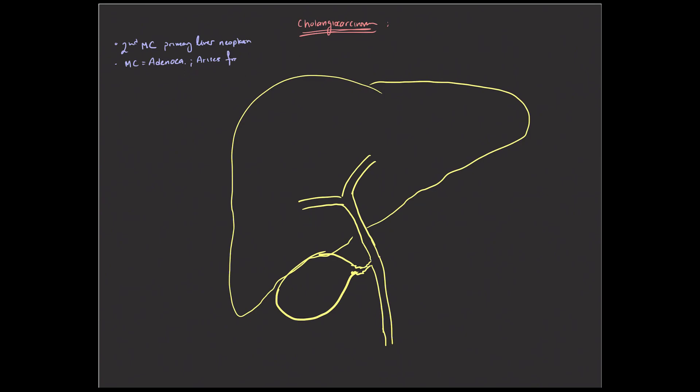These are neoplasms that arise from the biliary tree. They can be intrahepatic ducts or the extrahepatic ducts, but that's where they arise from, these cholangiocarcinomas. When you look at all patients with cholangiocarcinomas, we end up finding that they most often are seen in patients towards the sixth and seventh decades of life. But it is important to know that they can be seen earlier in patients who have risk factors.